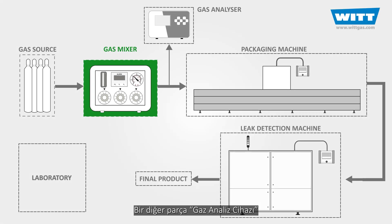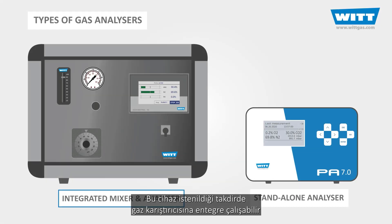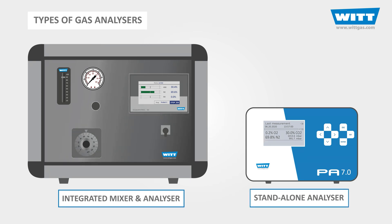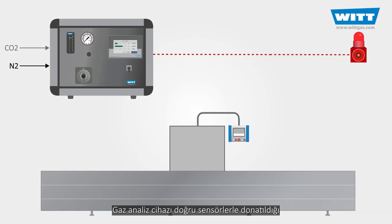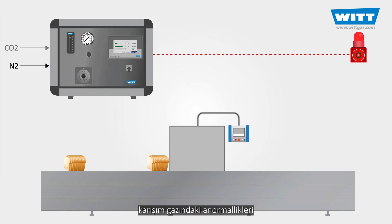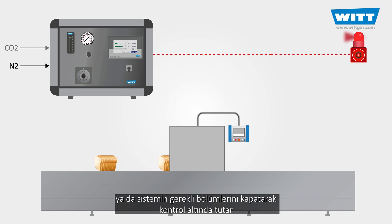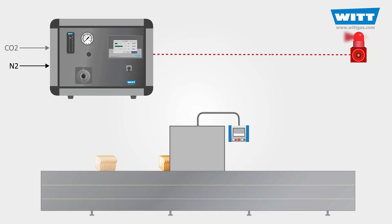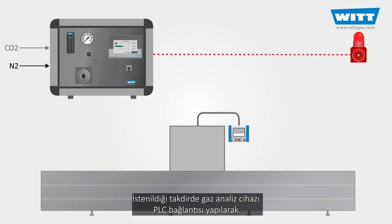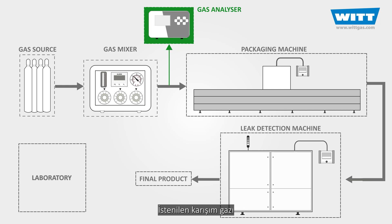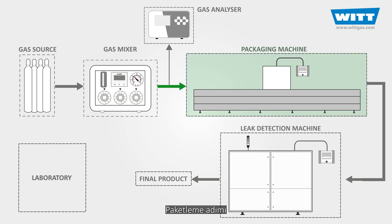The next component is the gas analyzer, which could be integrated into the gas mixer or could be a standalone unit for monitoring the exact real-time percentages of the gases. Equipped with measurement sensors, the analyzer will work in conjunction with the mixer, and in case of any anomalies in the gas mixture, it will inform the operator by activating an alarm, or will directly shut down the whole or a specific part of the system. The analyzer can be connected to a PLC as well, and be integrated into the main control system.